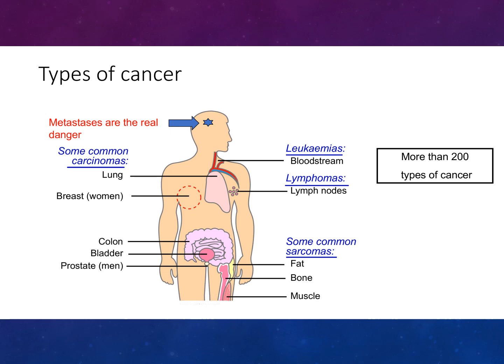Metastases are the real danger with different vessels where cancers can spread. Common carcinoma occurs in the lung, leukemia is in the bloodstream, lymphoma is in the lymph node, and sarcoma is in the fat, bone, and muscle.